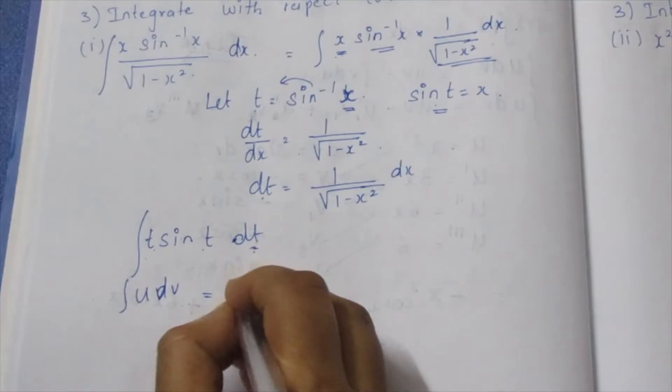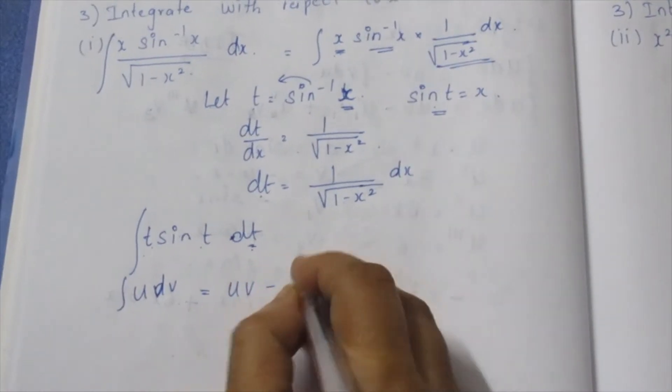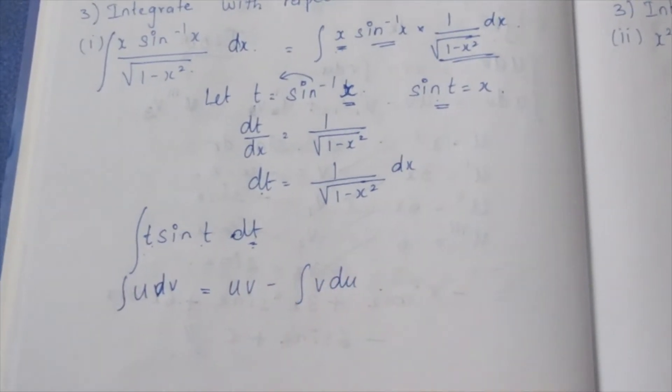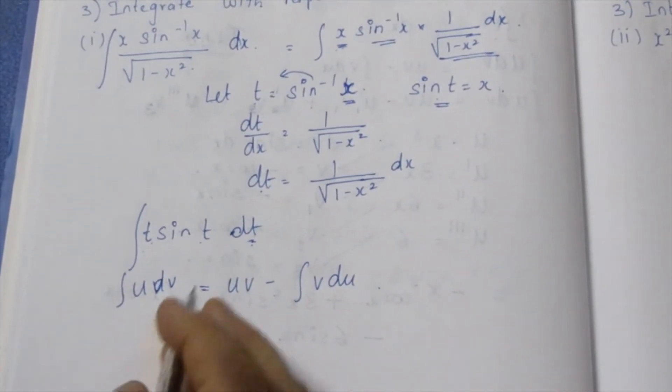This is the formula: U dV = U·V minus V·dU. That is the integration by parts formula.